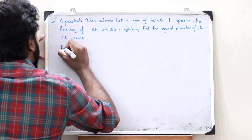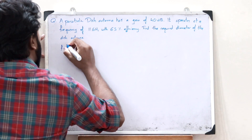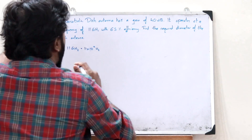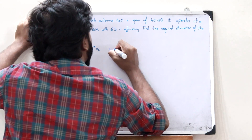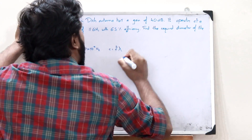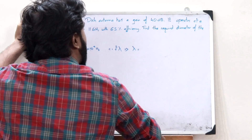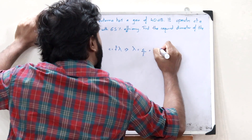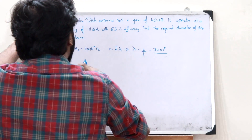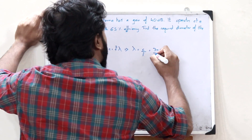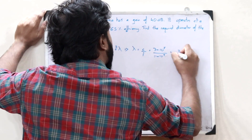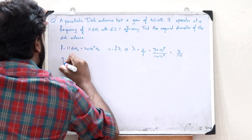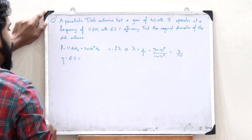First, let us write down the parameters. The frequency f is equal to 11 gigahertz, which is 11×10⁹ Hz. We know c = fλ, so the wavelength λ = c/f = (3×10⁸) / (11×10⁹) = 3/110. Let's keep it in that form for now. The efficiency η is given as 65%, which equals 0.65.